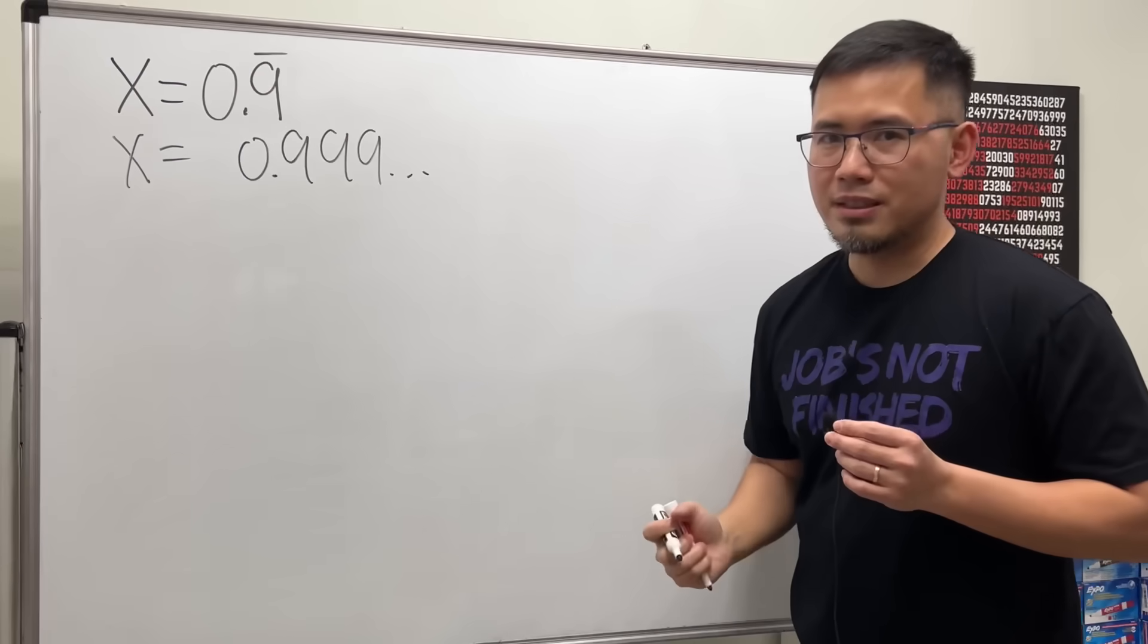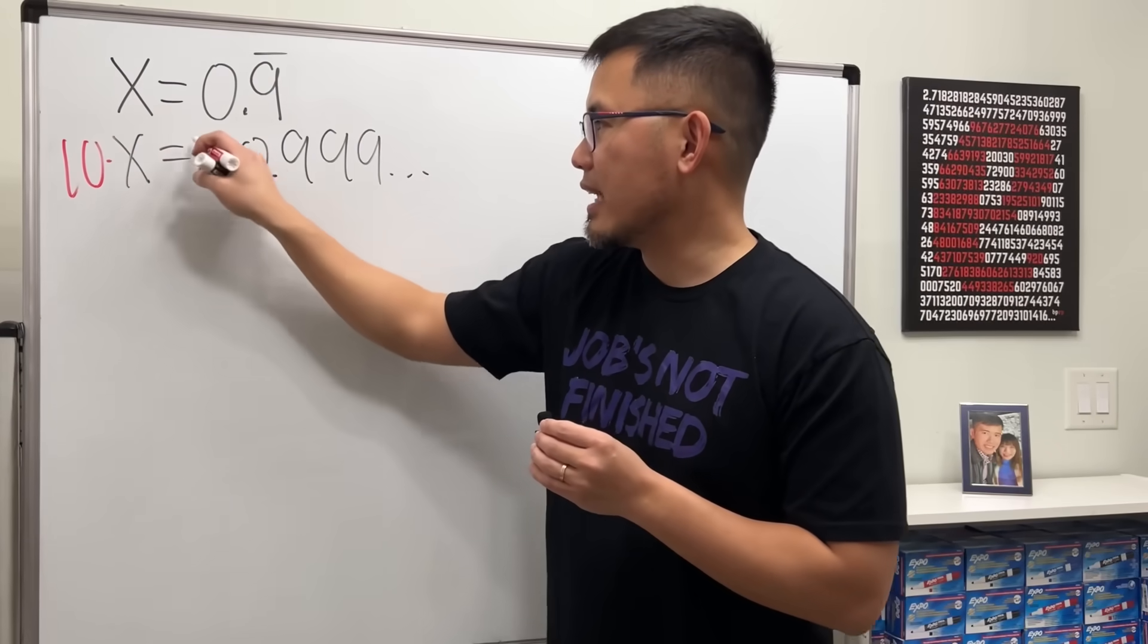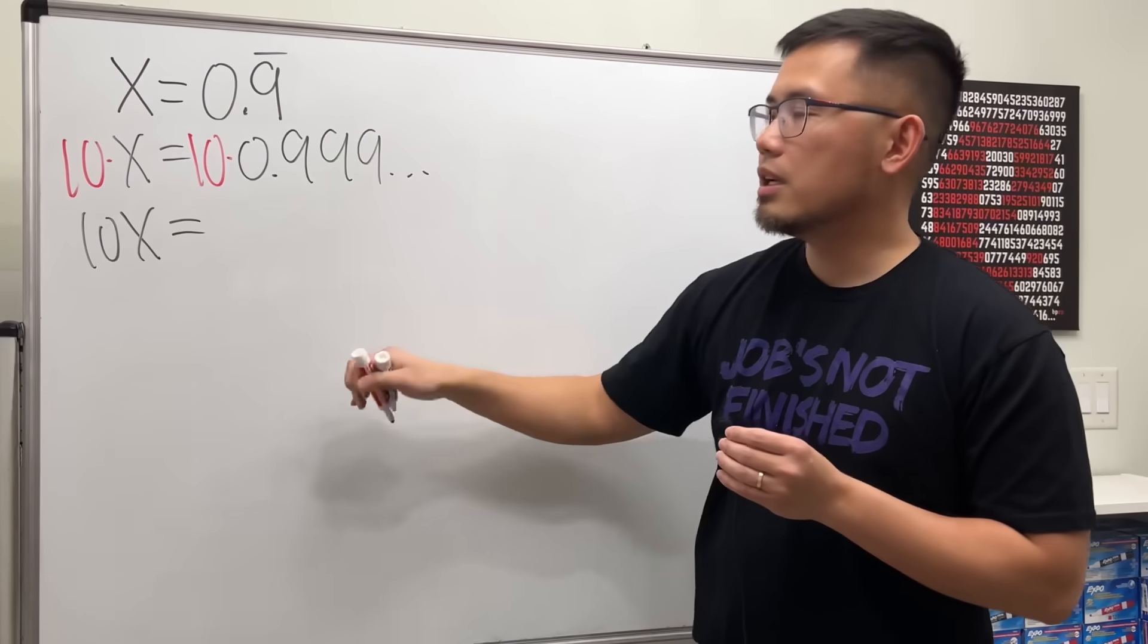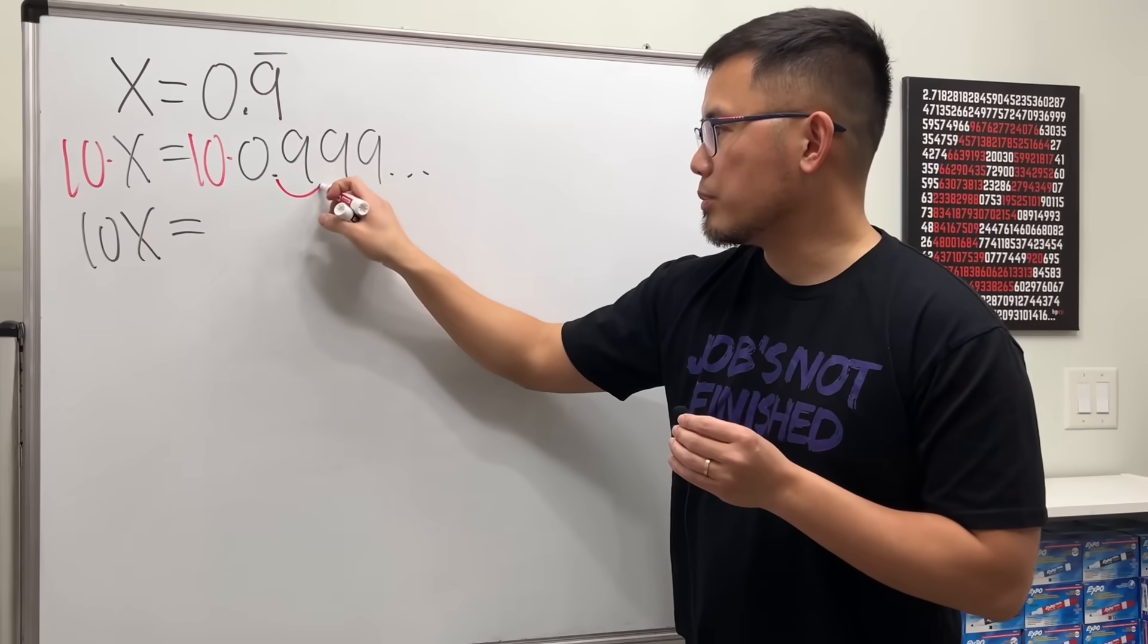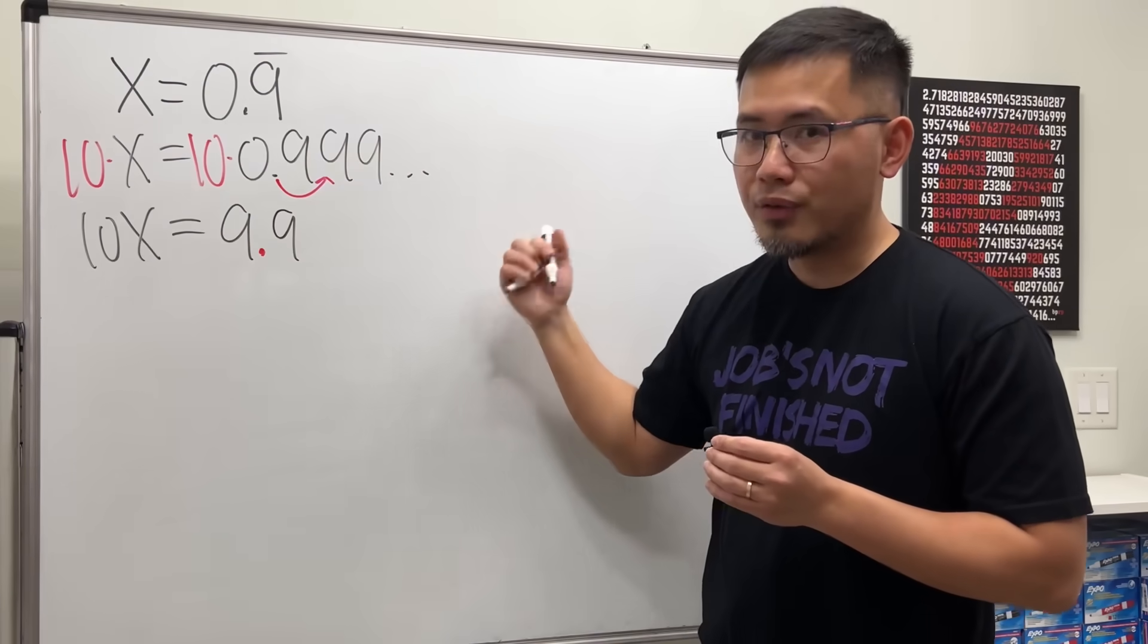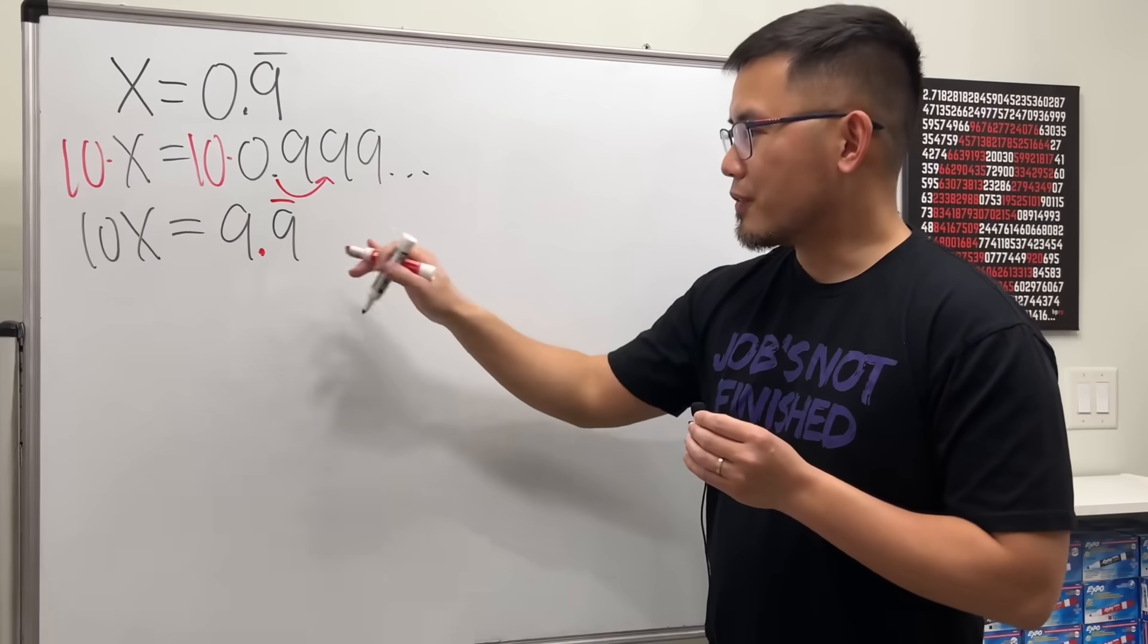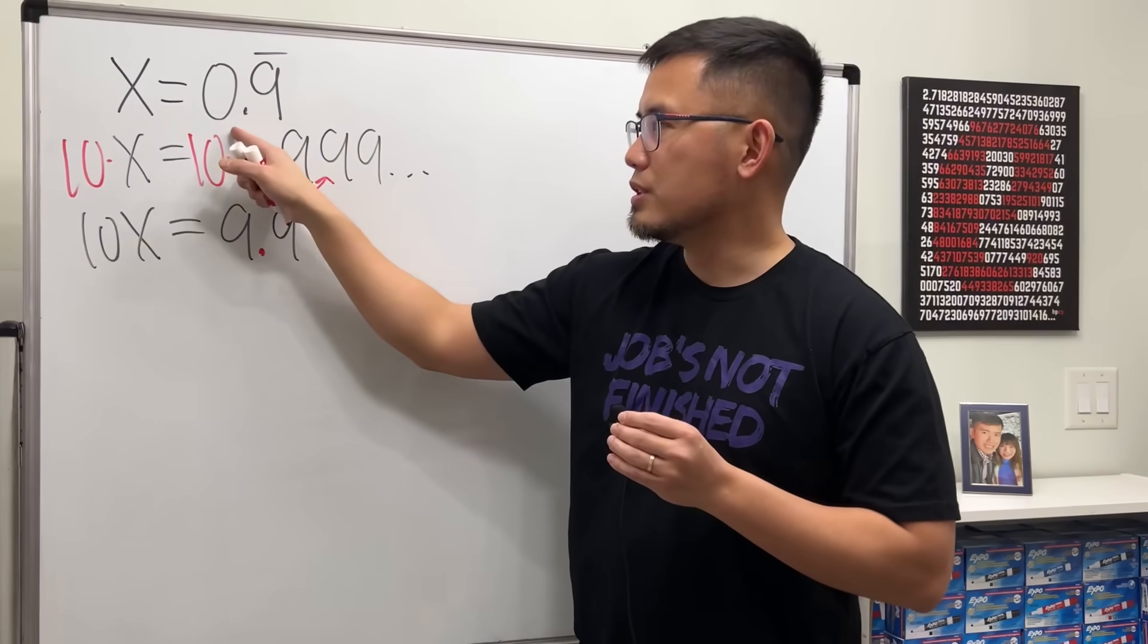So this means we have x equals 0.999 and so on, so on. We have infinitely many nines. Right here, we are going to multiply both sides by 10. So on the left-hand side, we just have 10x. And on the right-hand side, when we multiply 10 by this decimal number, we move the decimal point one time to the right. So we get 9.9999 forever. We can also put a bar right here. You see 10x is equal to 9.9 repeating, and x is equal to 0.9 repeating.